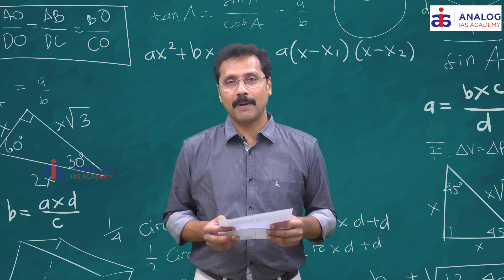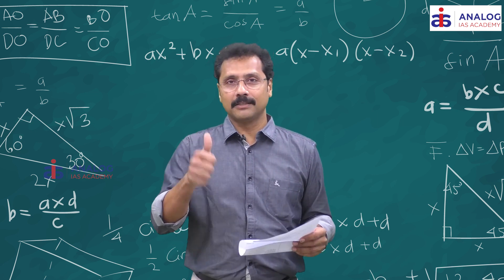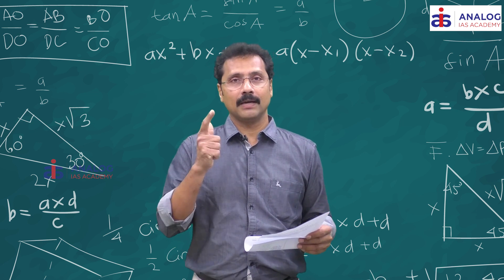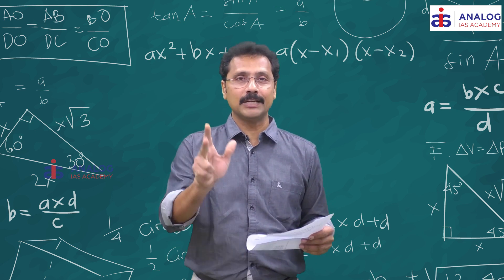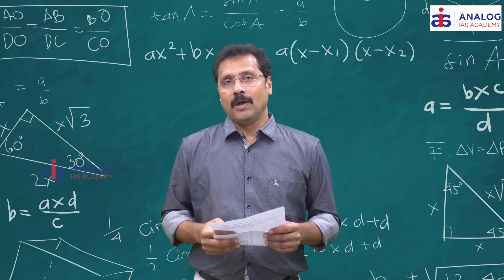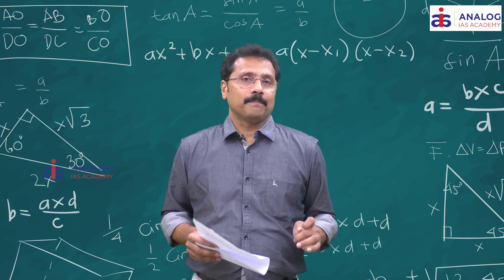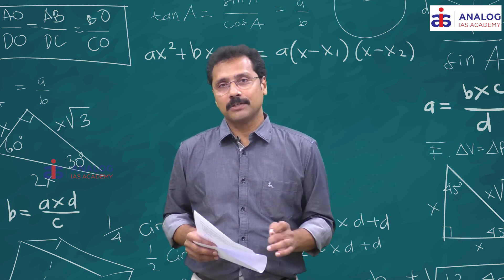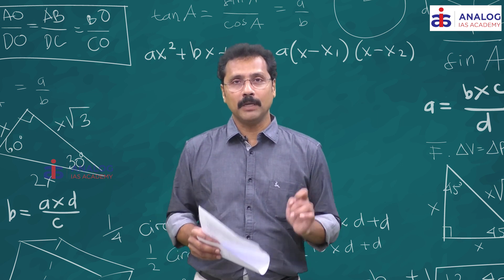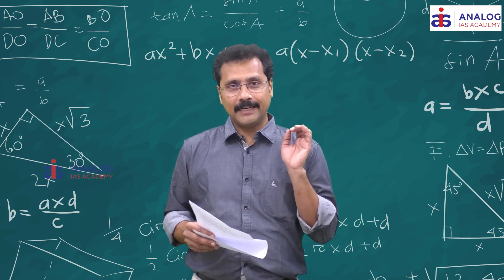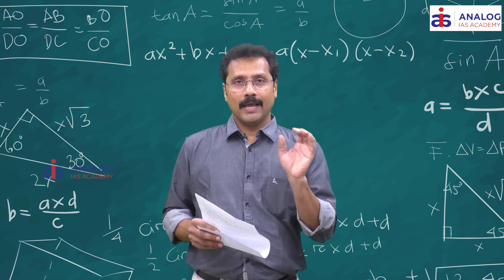In this batch, there are three modules. One is the arithmetic module. Two is the reasoning module. Three is the English comprehension module. Arithmetic is 80 hours, reasoning is 40 hours, and English reading comprehension is 20 hours. We are going to talk about high yielding areas in C-SAT.